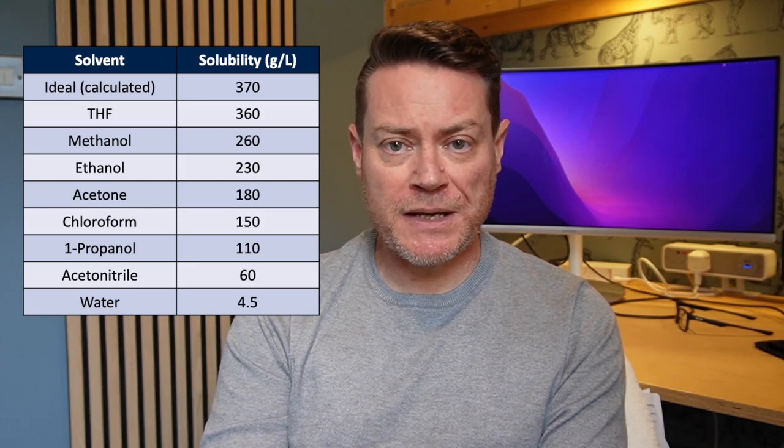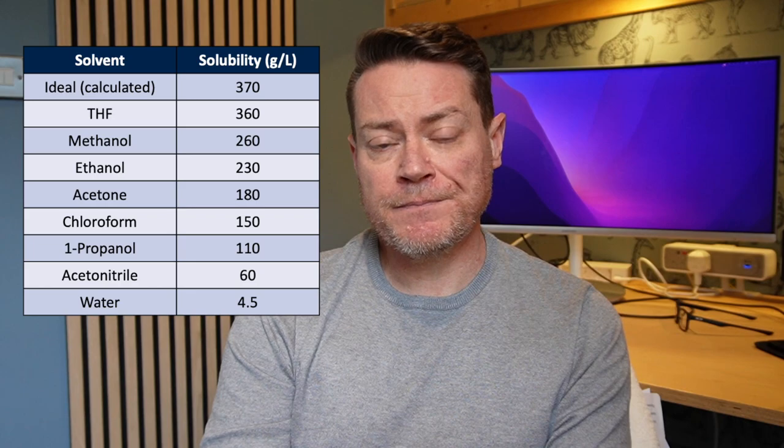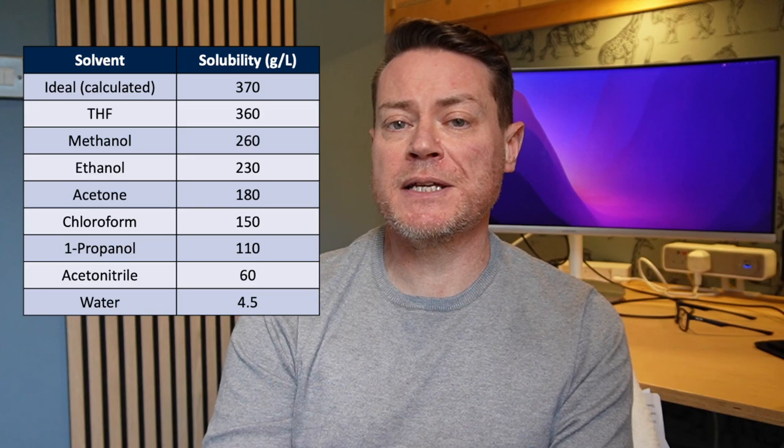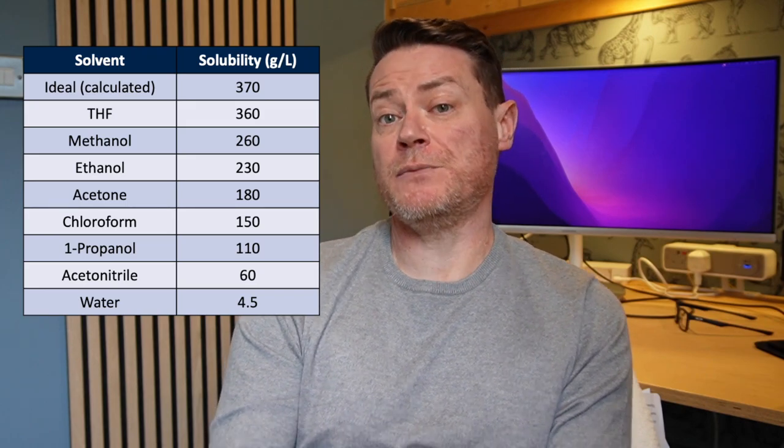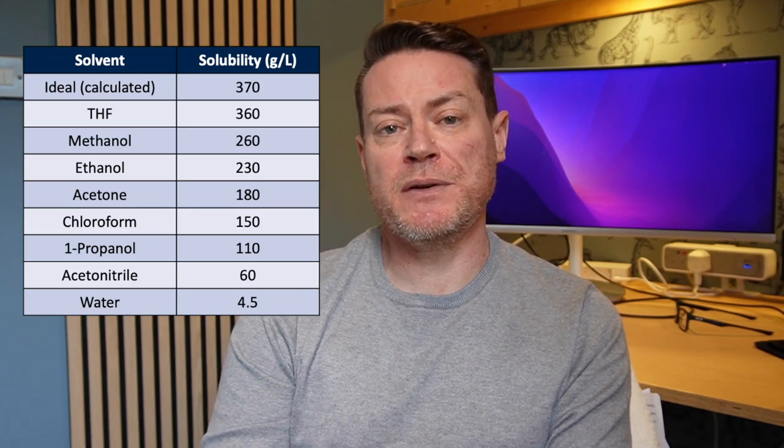Is the ideal solubility we calculate actually related to the solubility we would measure experimentally? Almost never. It's because the enthalpy of mixing is almost never zero. But what calculating ideal solubility does allow is a comparison with measured solubility, and this allows us to see if there's a favourable — the measured solubility is higher than ideal — or unfavourable — the measured solubility is lower than ideal — interaction between our compound and water. We can also measure solubilities in a range of solvents and see where the enthalpy of mixing approaches zero. Here are some data for aspirin solubility in a range of solvents. You can see that the ideal solubility and solubility in THF are almost the same, while the solubility of aspirin in water is massively lower than ideal — in other words, there is a strongly unfavourable interaction between aspirin molecules and water.